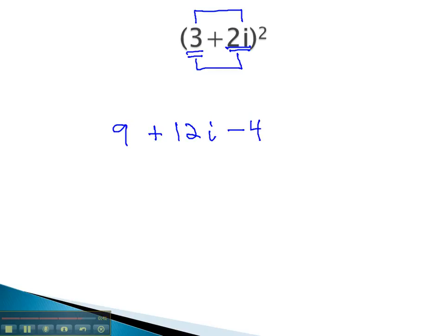Now, all that's left to do is combine like terms. 9 minus 4 is 5, plus 12i. And this becomes our final solution.